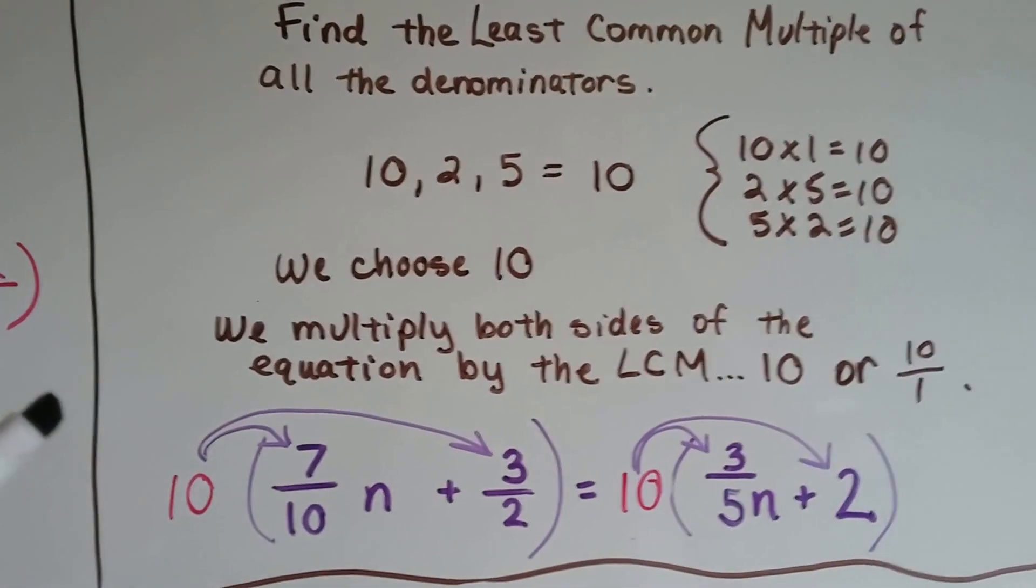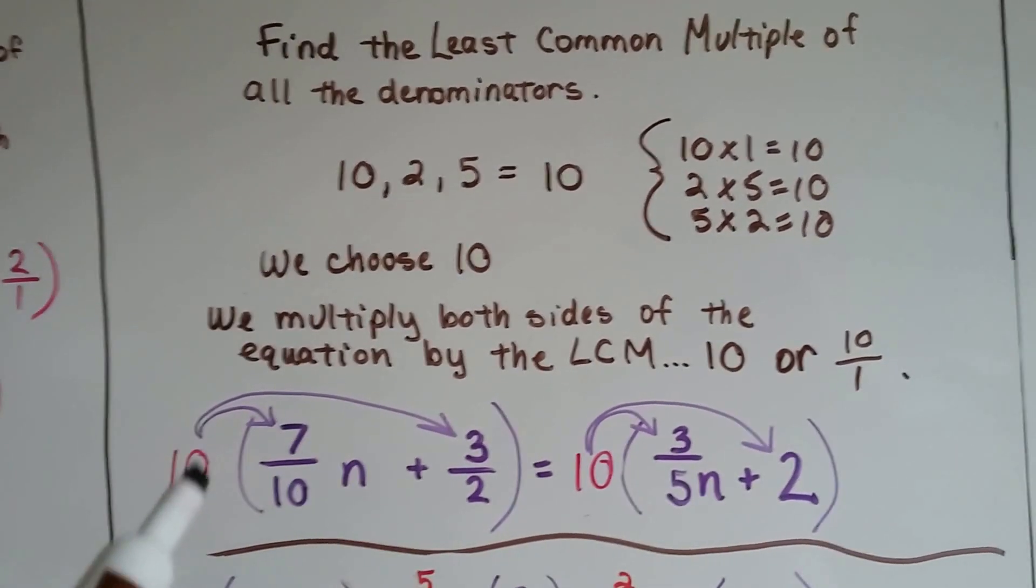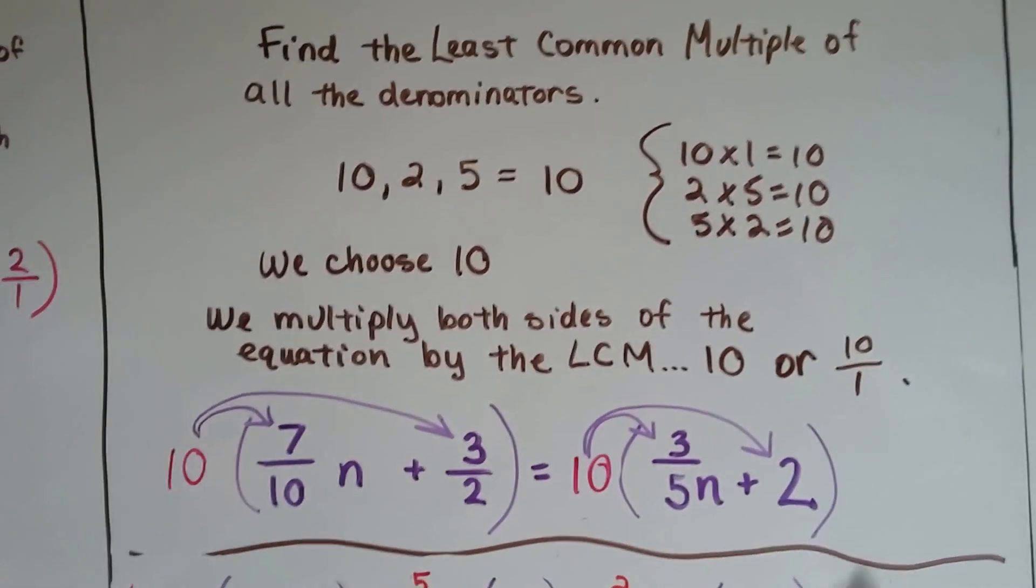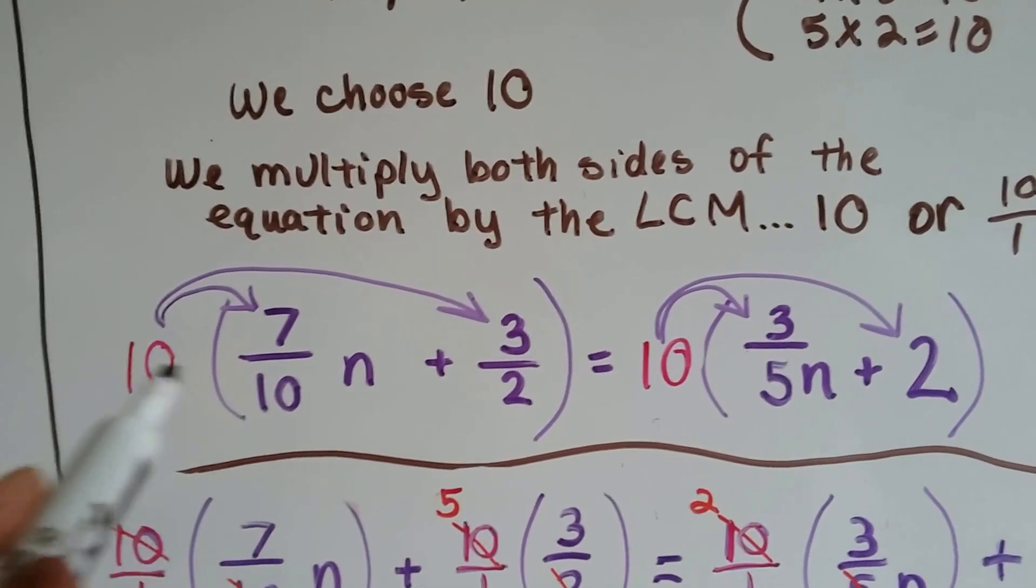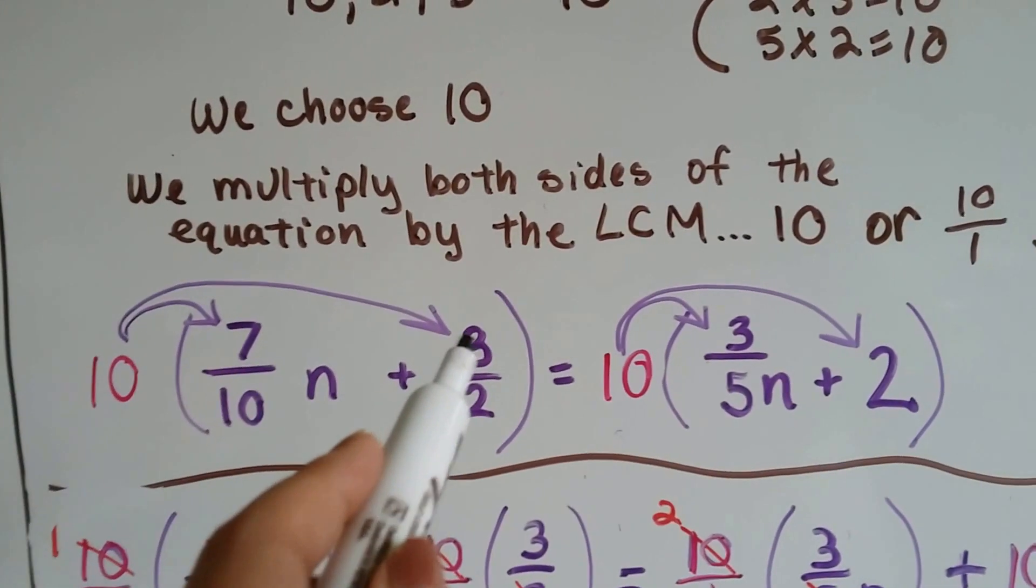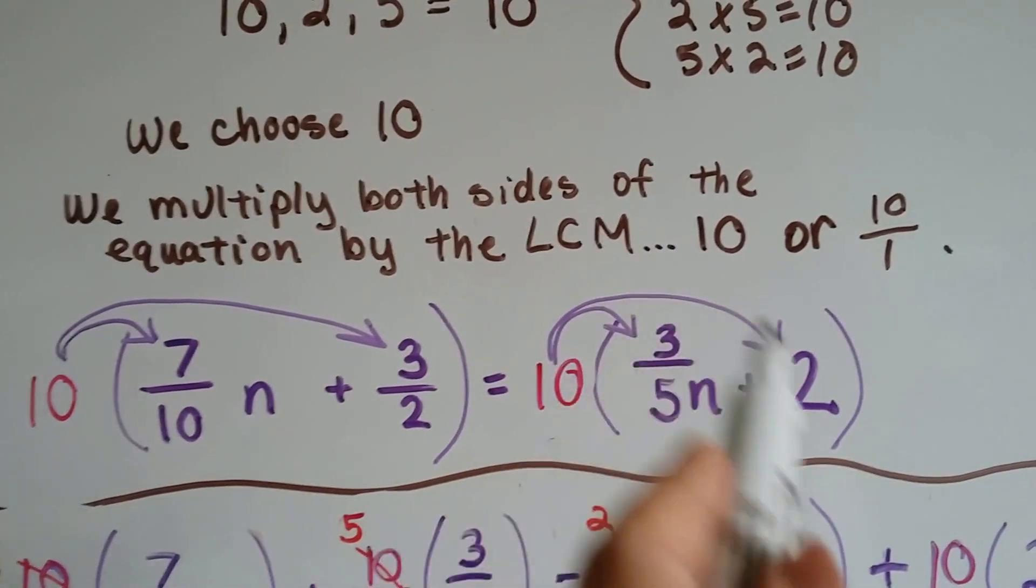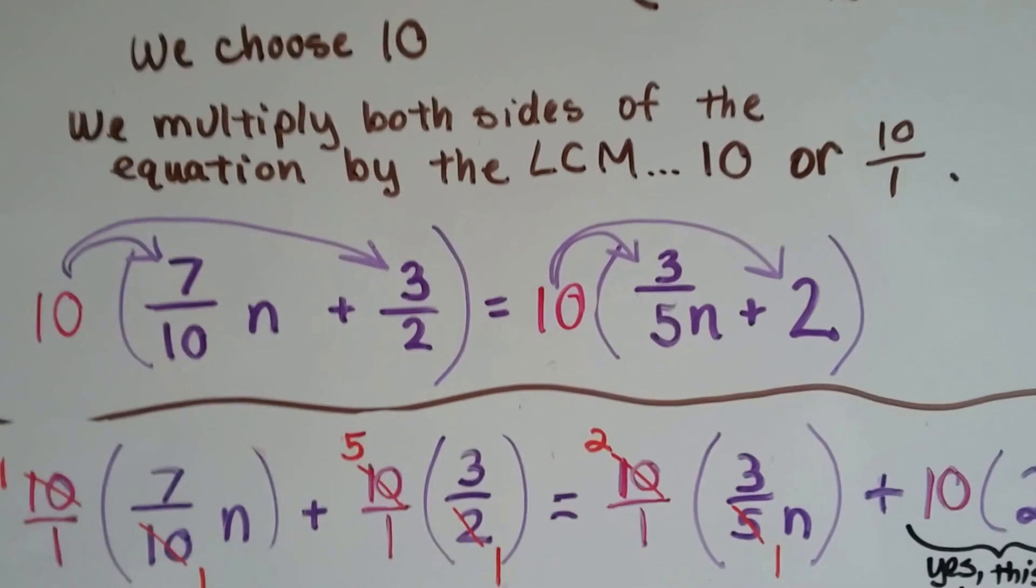Now we need to multiply both sides of the equal sign, both sides of the equation, by that 10, that least common multiple. We can do it as a whole number 10, or a 10 over 1. So we have to multiply the 7 tenths n by the 10, and we have to multiply the 3 halves by the 10. And then on this side of the equal sign, we have to multiply the 3 fifths n by the 10, and the 2 by the 10. Each term is going to get multiplied by 10.